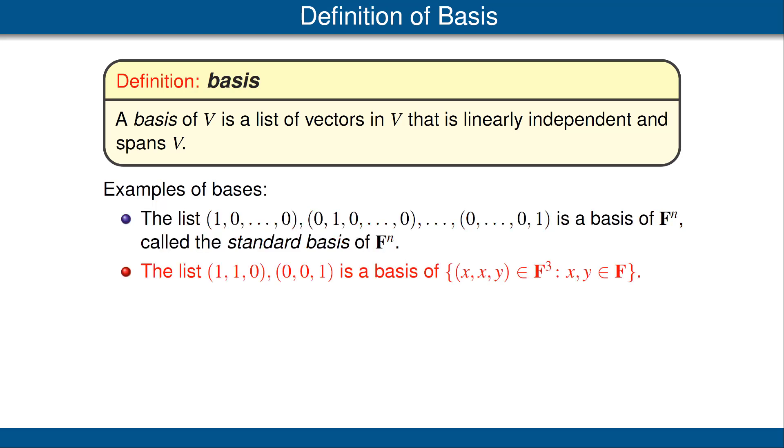Let's look at another example. Here we consider the subspace of F³, consisting of those vectors whose first two coordinates are equal to each other. The claim is that the list (1,1,0) and then the second vector (0,0,1) is the basis of this vector space. The reason for that is that this list is easily seen to be linearly independent. Furthermore, if (x,x,y) is in our vector space, then (x,x,y) equals x times the first vector plus y times the second vector in this list, showing that the list spans our vector space. Because the list spans the vector space and is linearly independent, it is a basis.